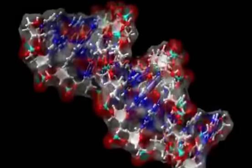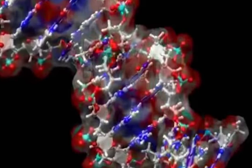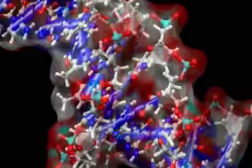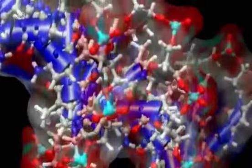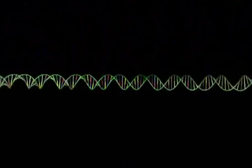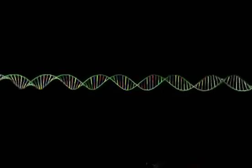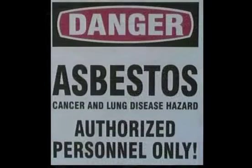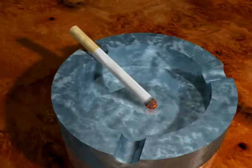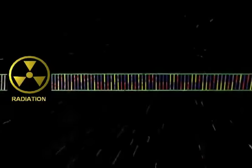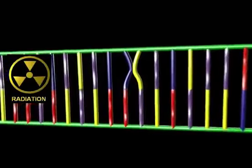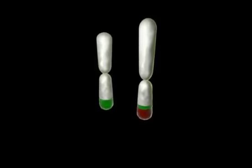If a change occurs to the nucleotide sequence, it is like having the letters of a word changed. An alteration in a gene is called a mutation. There are a number of different things that can cause mutations. Examples include chemicals that can be swallowed or inhaled, such as those found in chewing tobacco and cigarette smoke, and radiation from the sun or artificial sources like a tanning bed. Sometimes mutations occur without any known external cause — they just happen.